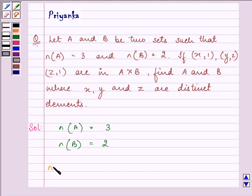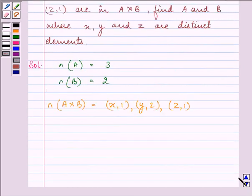we have number of elements in A cross B is equal to (x,1), (y,2), (z,1). These are the ordered pairs which we are given.